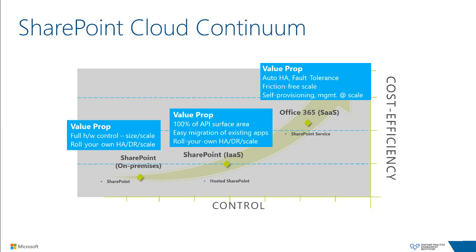The middle ground is what this session is about: you lose some degree of control but still maintain enough control to deploy highly customized solutions. You are still responsible for software including high availability, disaster recovery, and scale, but you no longer manage physical servers, network components, and underlying physical storage. The last scenario — SharePoint in Office 365 — is by far the most efficient, with minimal management overhead since it's a purely managed service, but at the cost of losing some software-level control. The right scenario depends on the requirements of your application.